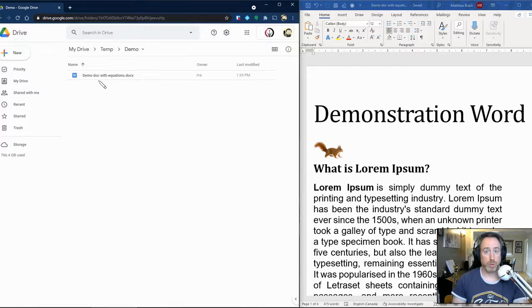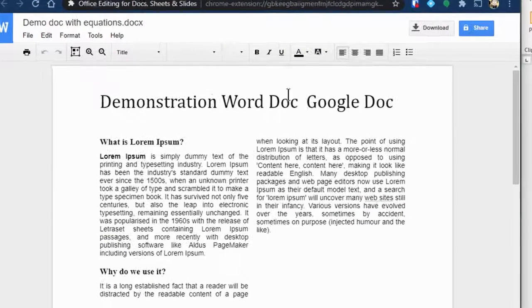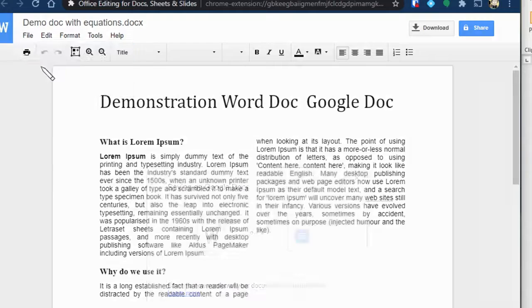And now I've got it in Google Drive. When I double-click on it, it gives me that sort of Google Doc preview of it, which is obviously not going to show things properly. So I'm just going to say File, Save as Google Doc.